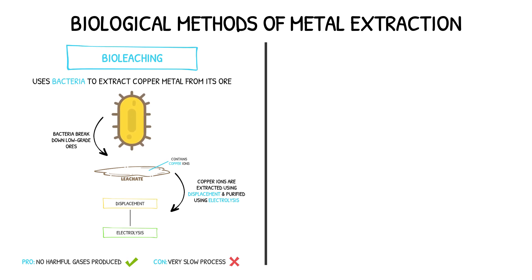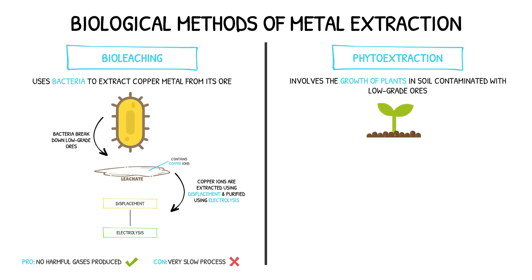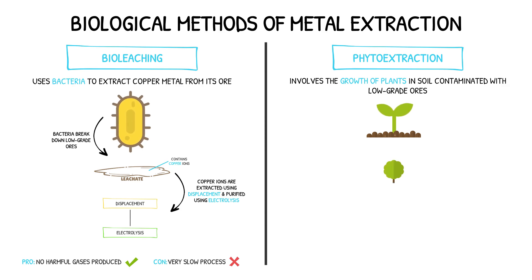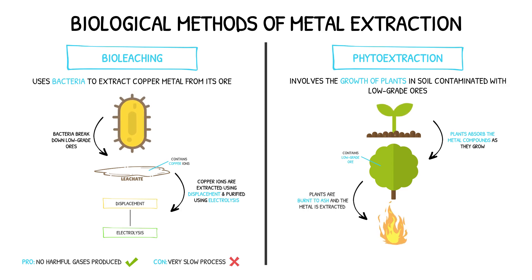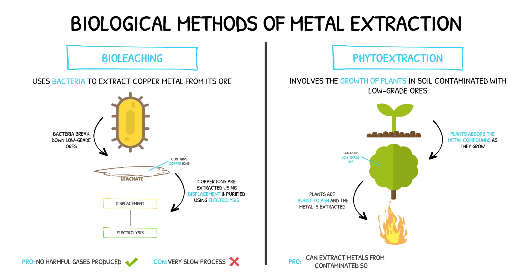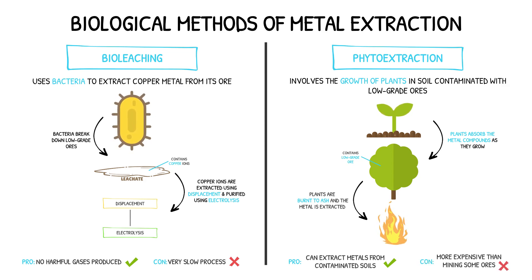The second biological method is called phytoextraction. This method involves the growth of plants in soil contaminated with low-grade ores. As the plants grow, they absorb the metal compounds from the soil, which are then extracted by burning the plant into ash. The process is great for extracting metals from contaminated soils, however it is very slow and can be more expensive than the mining of some ores.